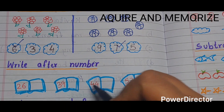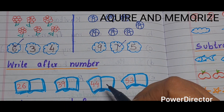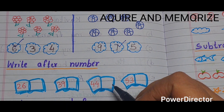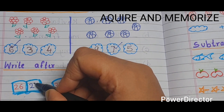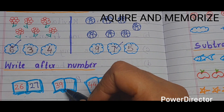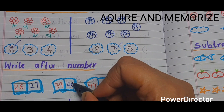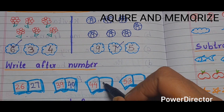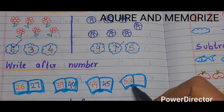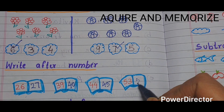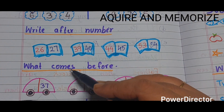Next section is 'after number'. We have numbers given and we have to write the after number of each. So 26 — we will write 27. 39 — we will write 40. 44 — we will write 45. 53 — we will write 54.